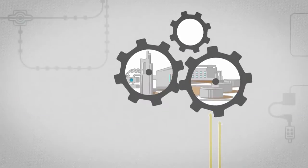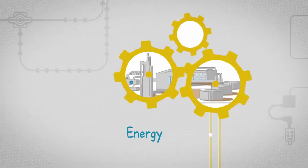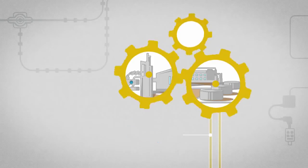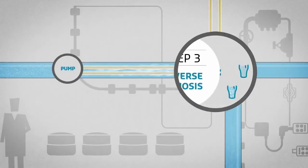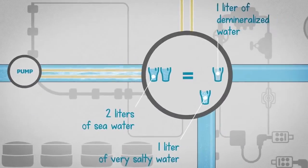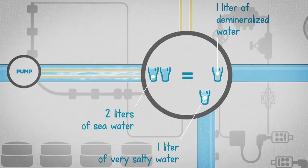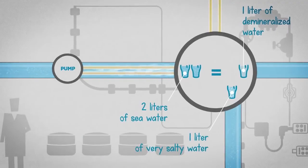The energy produced by this process is partly recovered and reused to operate the plant. For every two liters of salt water pumped, we obtain one liter of pure and demineralized water. The other liter of water, called brine, is twice as salty. After being treated and diluted, it is returned to its natural marine environment.